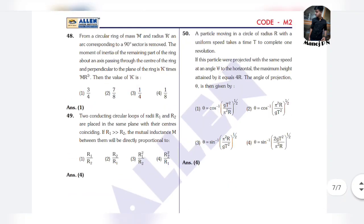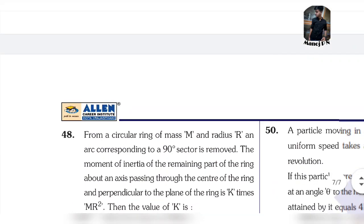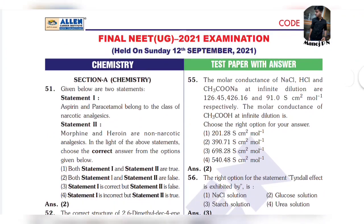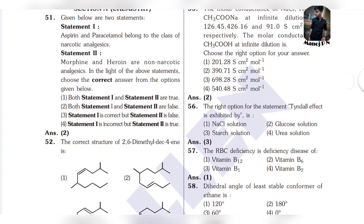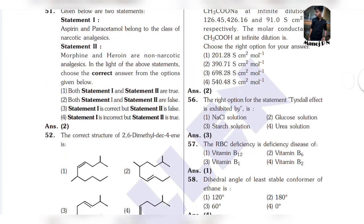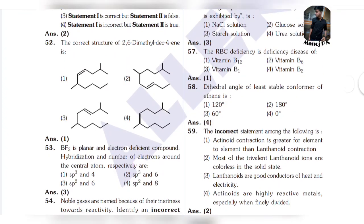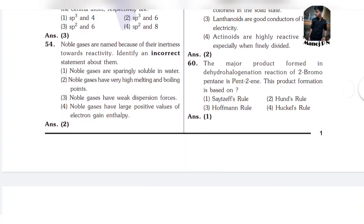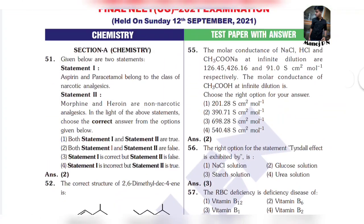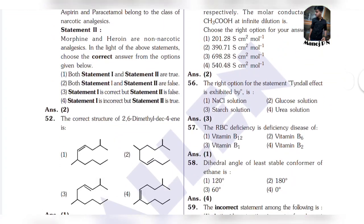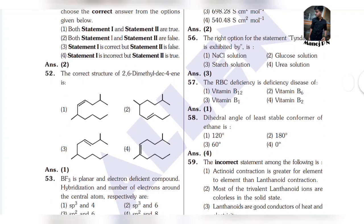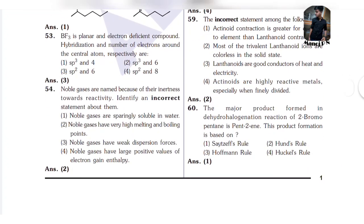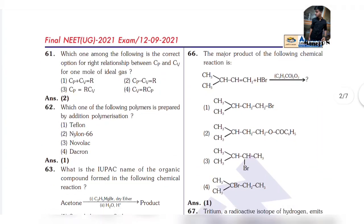So this is physics. Now let's discuss chemistry. First question: 52 is 2, 53 is 1, 53 is 3, 54 is 2, 55 is 2, 56 is 3, 57 is 1, 58 is 4, 59 is 2, 60 is 1, 61 is 2.